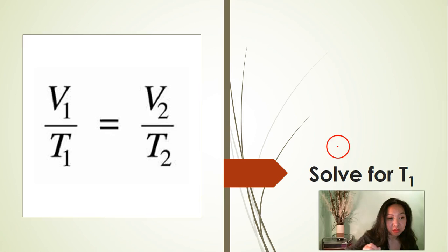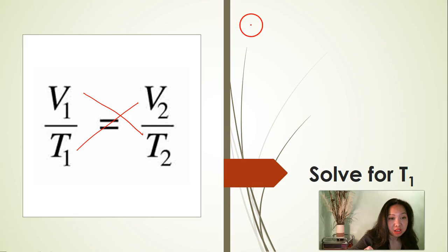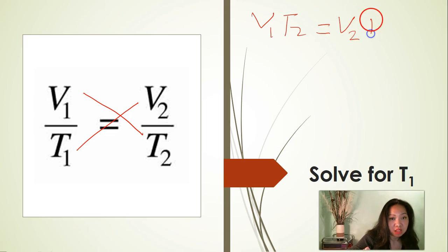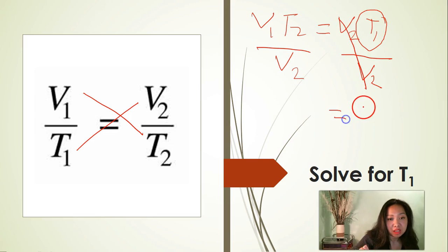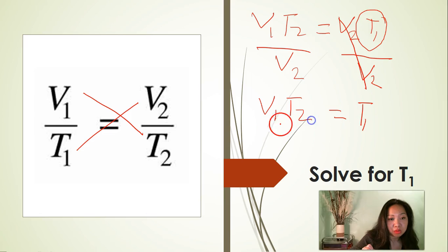Now solve for T1. We are going to cross multiply again to get rid of the denominators. V1 times T2 is equal to V2 times T1. Now isolate T1 by dividing both sides of the equation by V2. Cancel V2. That leaves us with T1 is equal to V1 times T2 divided by V2.